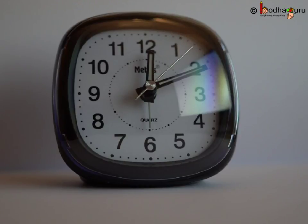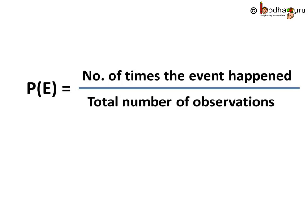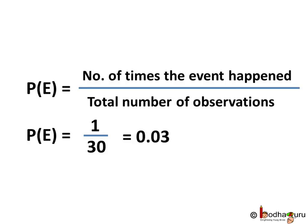So the probability of event E that he would be late is number of times the event happened divided by total number of observations. The number of times he was late is 1 and the total observations is 30 days. So P(E) = 1/30 = 0.03.